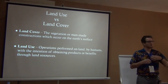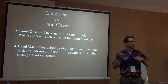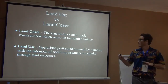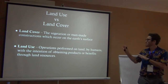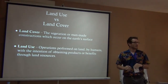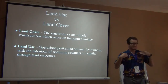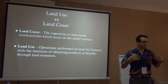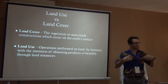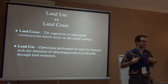Land cover is basically just the distribution of different types of land — it doesn't matter if it's human-made or natural. It's what we have: the vegetation or man-made constructions which occur on the Earth's surface. Whereas land use — the word 'use' has this implicit meaning that somebody or something is using it, and that means us.